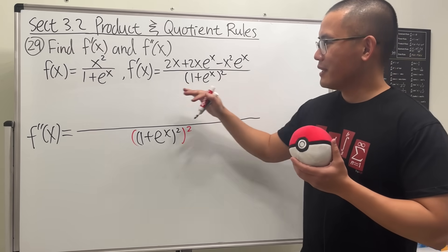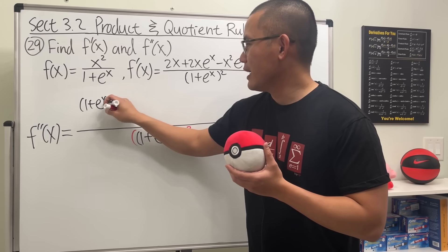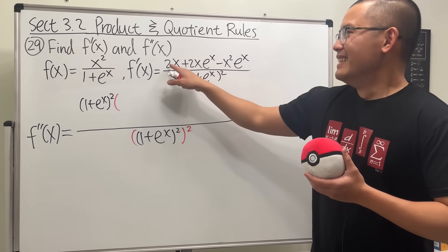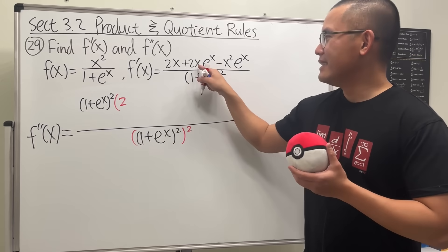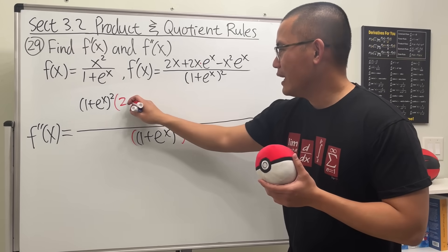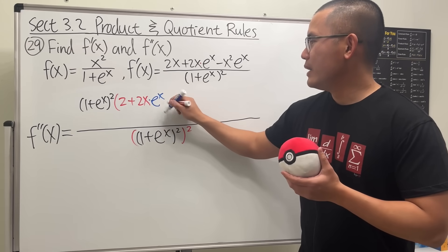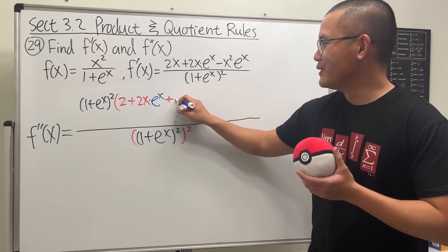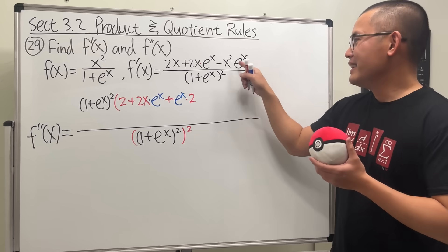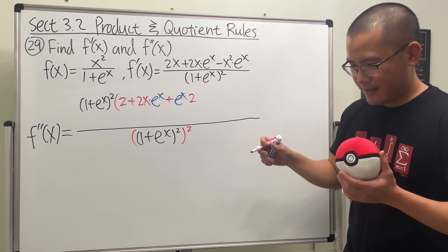Now put down the bottom function on the top — I'm going to write it down right here, you'll see why — (1 + eˣ)², and then we multiply by the derivative of the top. The derivative of 2x is just 2, no big deal. For the derivative of 2x·eˣ, we use the product rule: keep the first function and multiply by the derivative of the second, which is eˣ, then add the second function eˣ times the derivative of the first, which is 2.